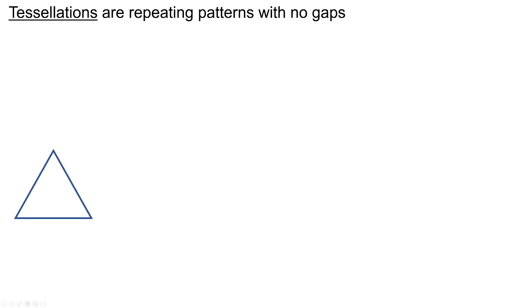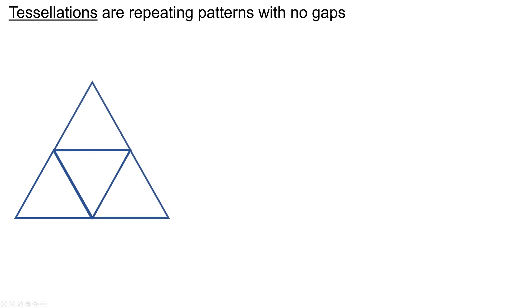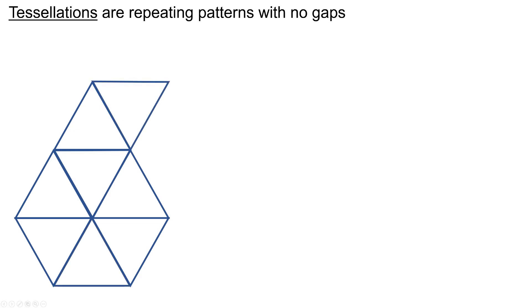Tessellation is a repeating pattern with no gaps. Imagine you have an equilateral triangle — you could draw another equilateral triangle next to it, and again, and again, and you can form a pattern which doesn't have any gaps in it. This is what it means for a shape to tessellate.